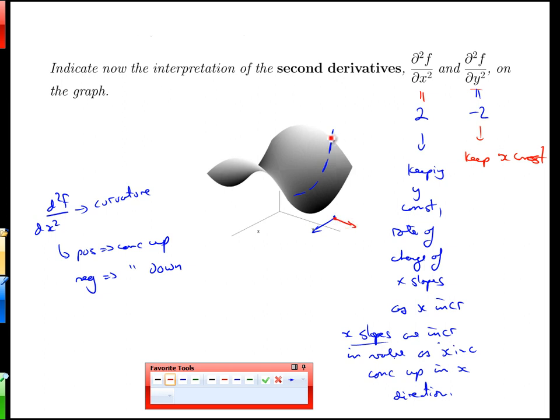What happens as we go in the y direction? Our y slope is negative 2, and then it gets steeper down and steeper downhill still. Or if you go the other direction, it was 0 and then negative 1, then negative 2, the y slopes are decreasing as y increases. And that corresponds to our second derivative, the rate of change of the y slopes being negative. Or the shape being concave down, shape of the surface being concave down in the y direction.